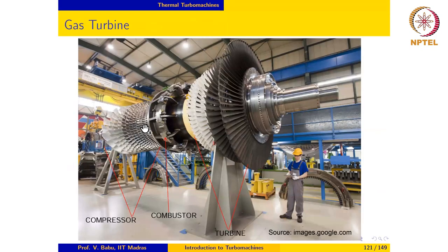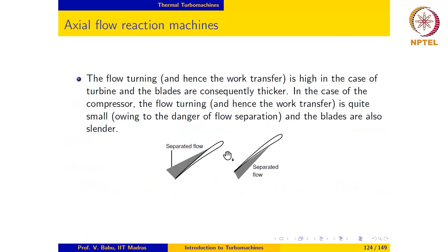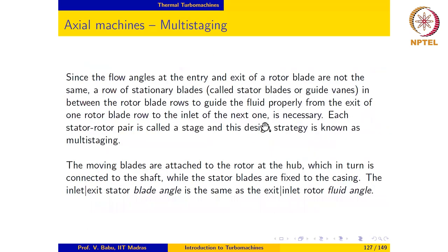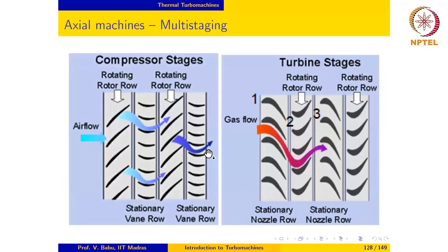The moving blades are attached to the hub, which is connected to the shaft. The stationary guide vanes are fixed between rotor blades and are attached to the casing. It is also possible to make the stator blades movable, in which case they are called variable guide vanes. The inlet-exit stator blade angle equals the exit-inlet rotor fluid angle.